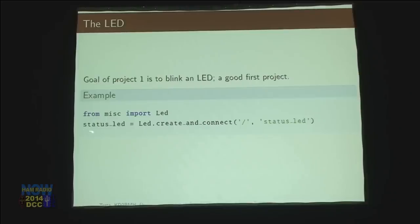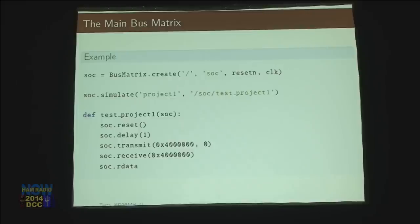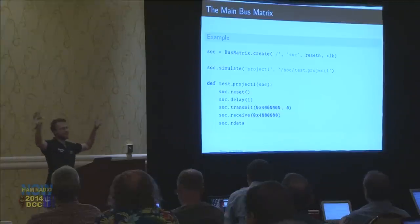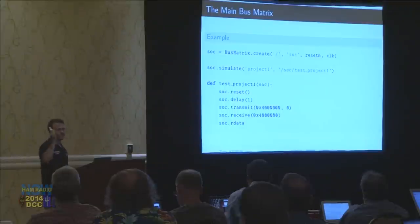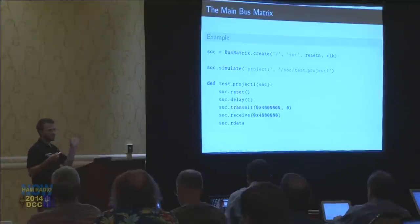I'm going to create a little LED at slash status_LED. There's a bunch of other things that we need to create to make our system on a chip — remember that tree diagram. One of them is the system on a chip, and we do that by creating a bus matrix, which is that main system bus. It takes in two things: a reset line and the clock. This is what's going to drive the system on a chip and the bus transactions.